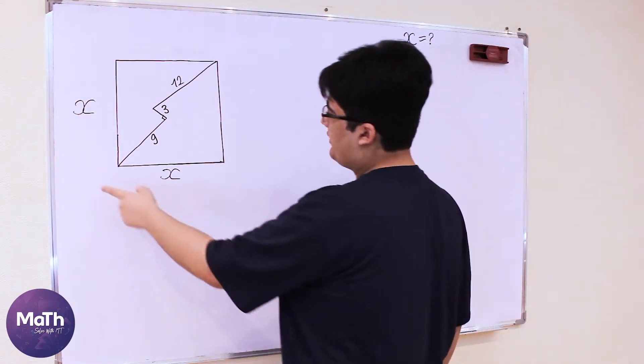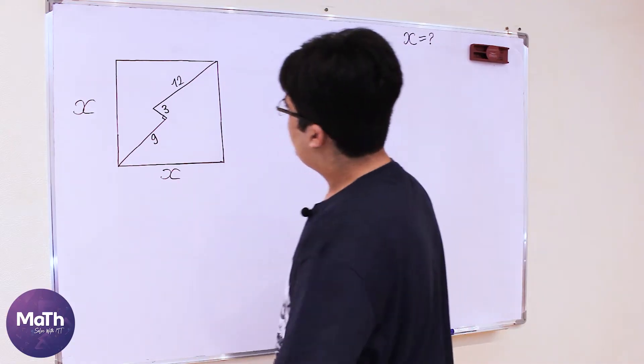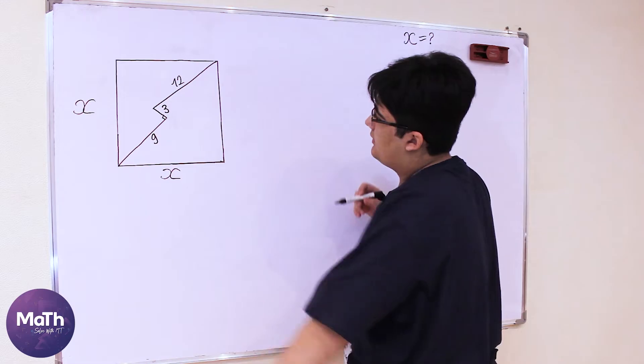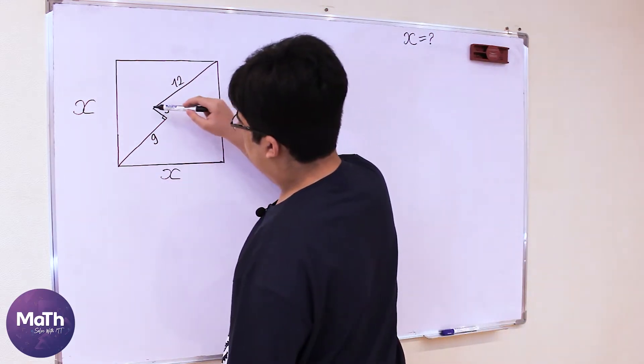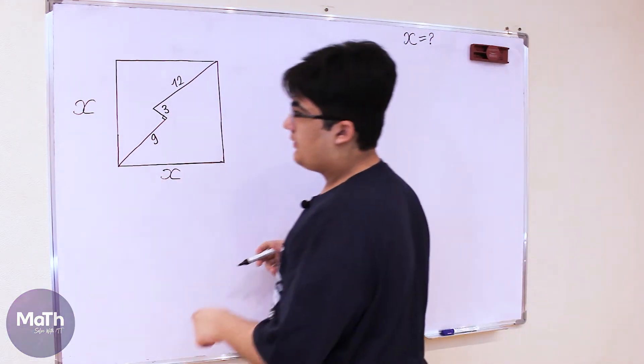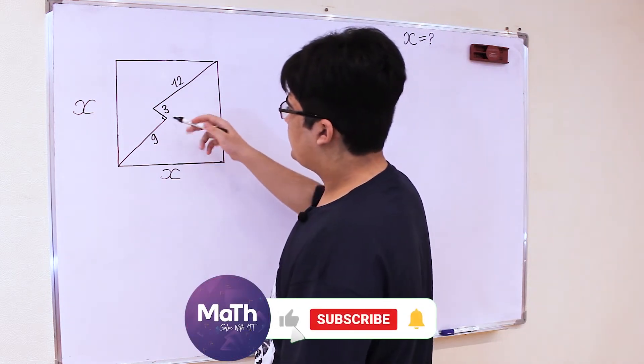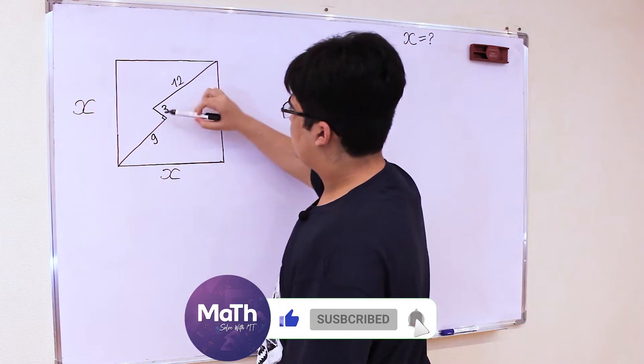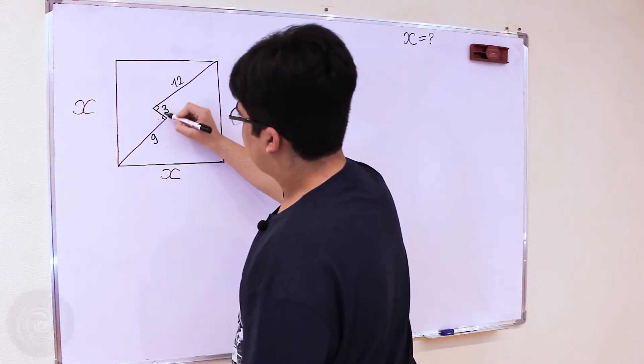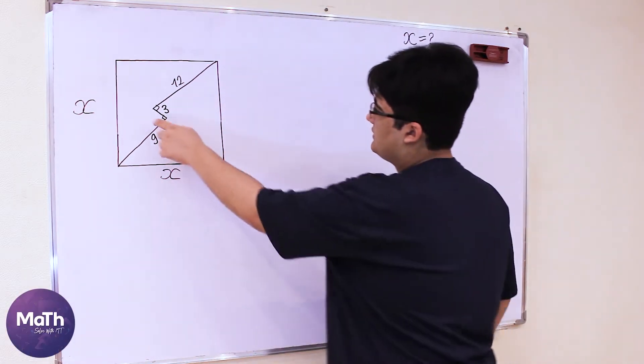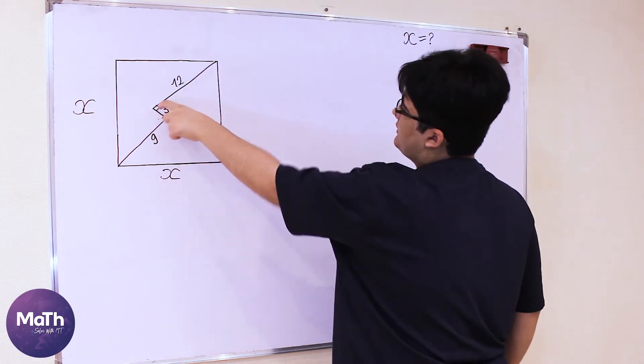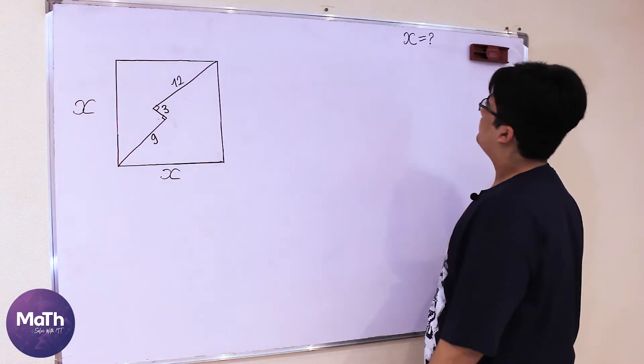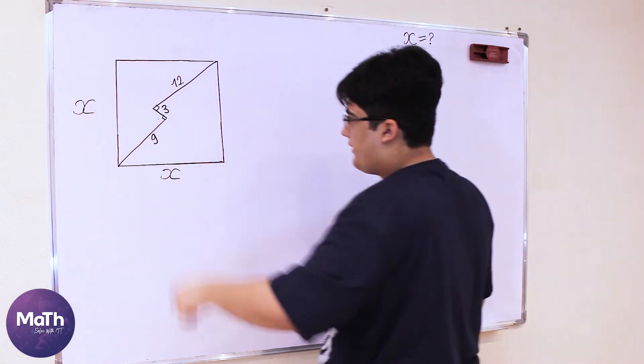We have a square here with sides that form right triangles. This is 90 degrees, the right angle, and this one is also a right angle. We need to find the side of the square.